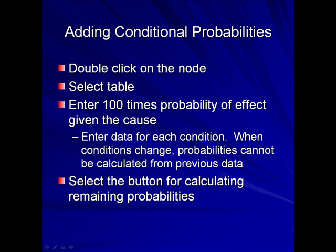To add conditional probabilities, double click on the node. Select the table. Enter 100 times the probability of effect given the cause. Enter data for each condition. When conditions change, probabilities cannot be calculated from previous data. Select the button for calculating the remaining probabilities.